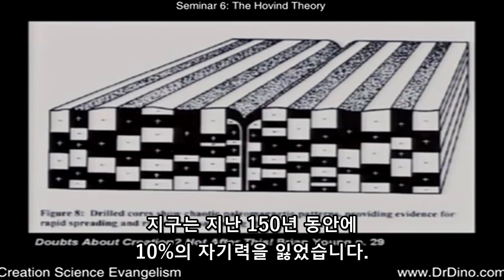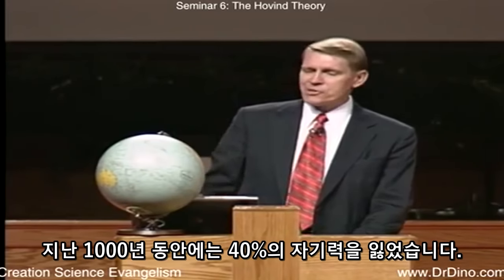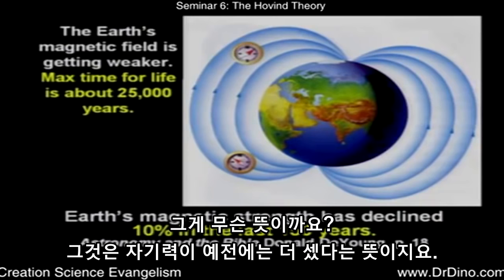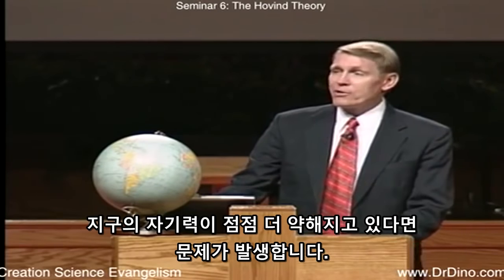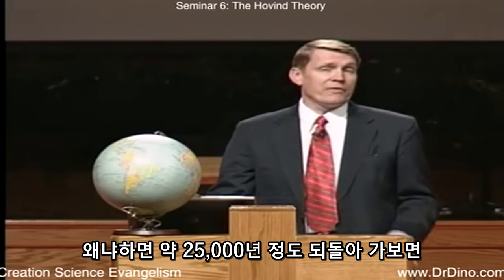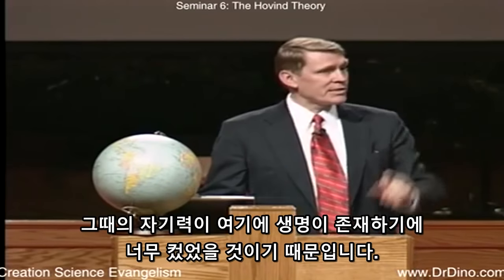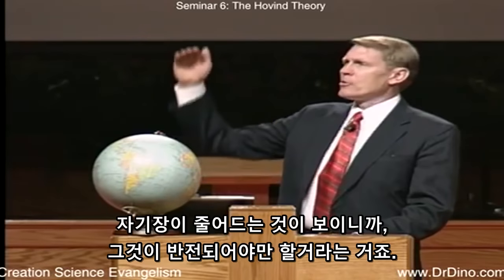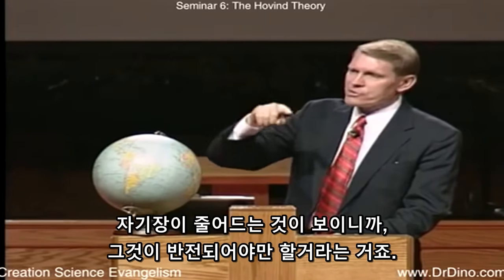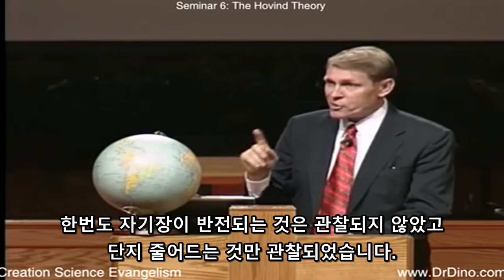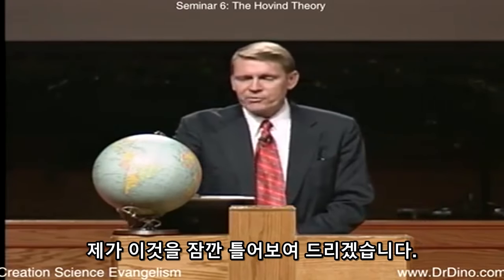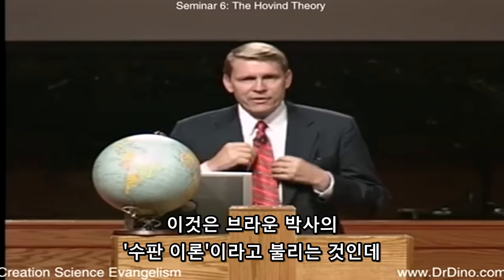The Earth's magnetic field is getting weaker — that means it used to be stronger. If you go back about 25,000 years, the magnetic strength would have been too great for life to exist because of the heat generated. So evolutionists say it must be going through reversals. But it has never been observed to reverse — it's only been observed to decline. I think Walt Brown has the best theory on continental drift. Let me play this for you quickly — it's called the hydroplate theory.